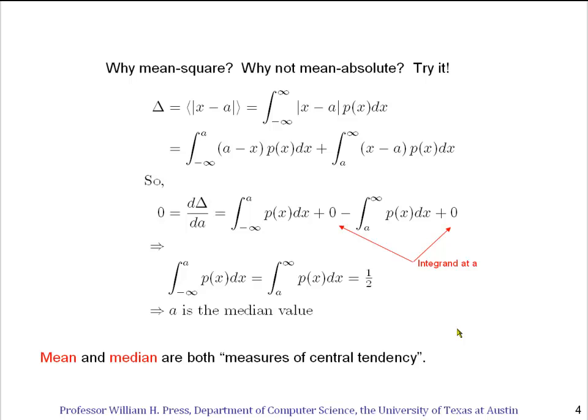So what we've learned is that mean and median are both completely principled ways of defining a measure of central tendency. Mean is the way of defining it that minimizes the least square deviation, and median is the way of describing it that minimizes, I should say, of defining it that minimizes the mean absolute deviation.